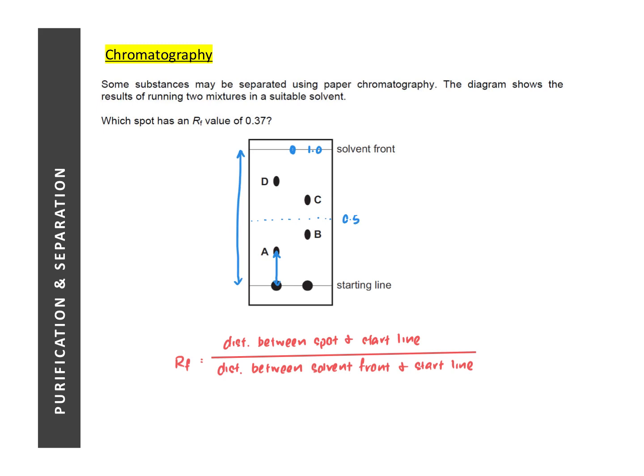So if we are looking for something that is 0.37, we can use the midpoint as a gauge and from there we can see that B seems to be the likely option. If you look at A, A seems to be at the quarter mark. So A is likely to have an RF value of slightly above 0.25.